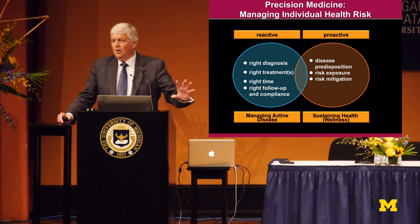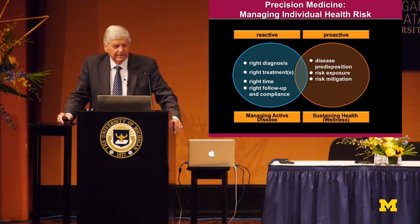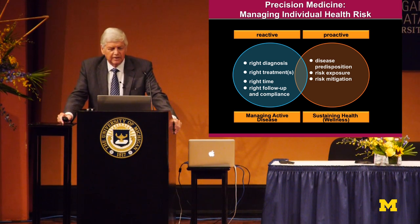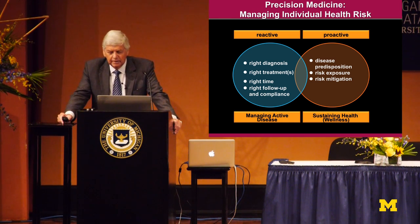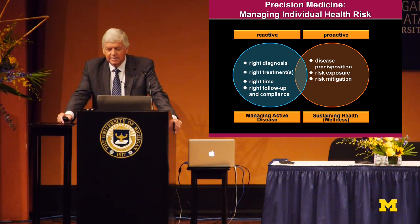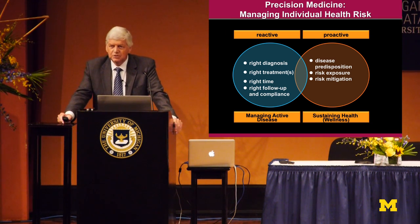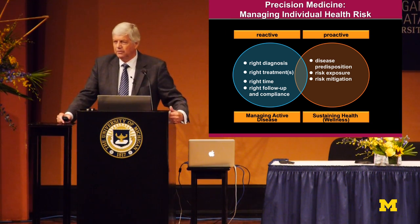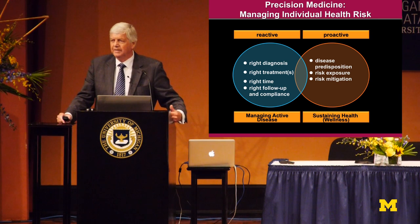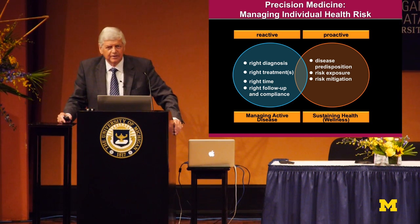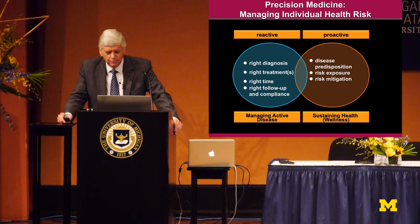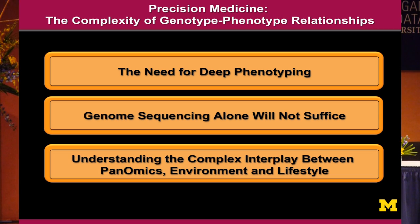The longer-term vision is how do we utilize that information for sustaining health — in short, risk identification: not just disease predisposition which we may have inherited, but what we've been exposed to. A terrible word, the exposome, has entered the vocabulary of the omics, but the overall goal is risk mitigation.